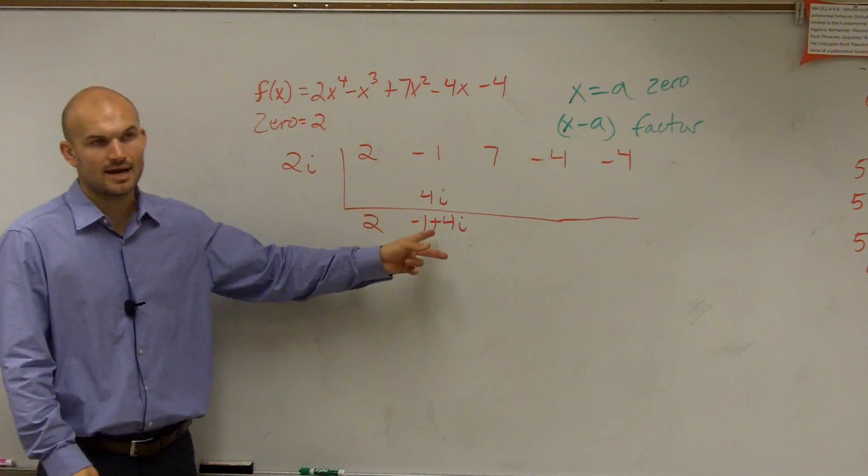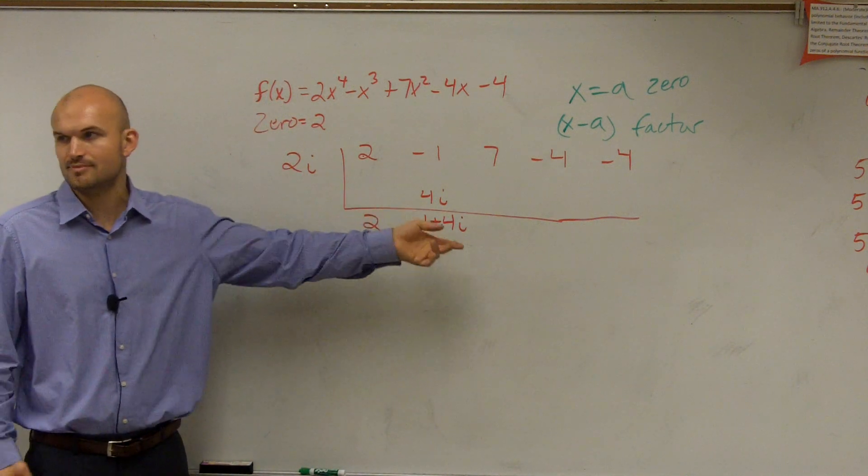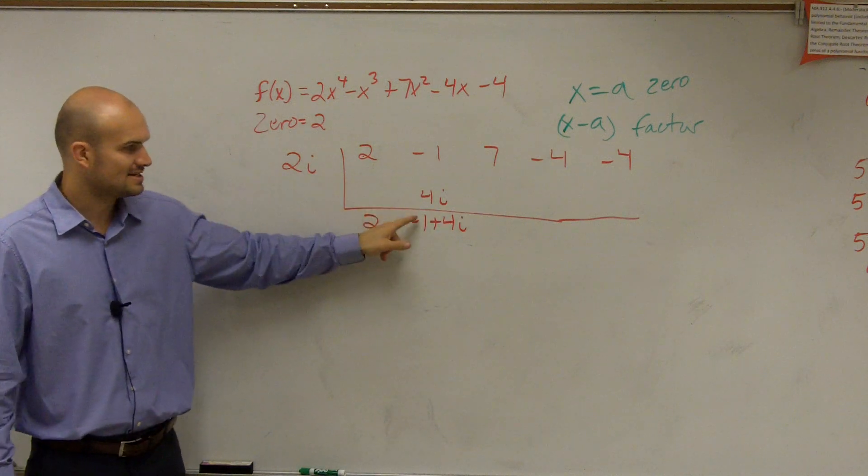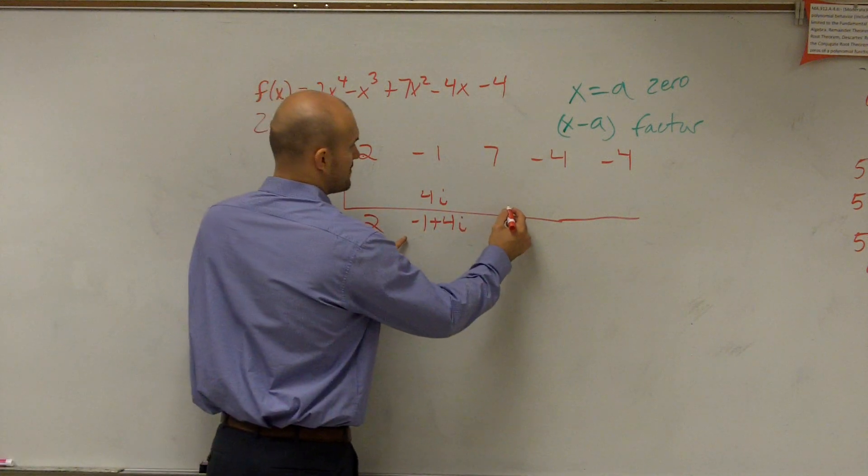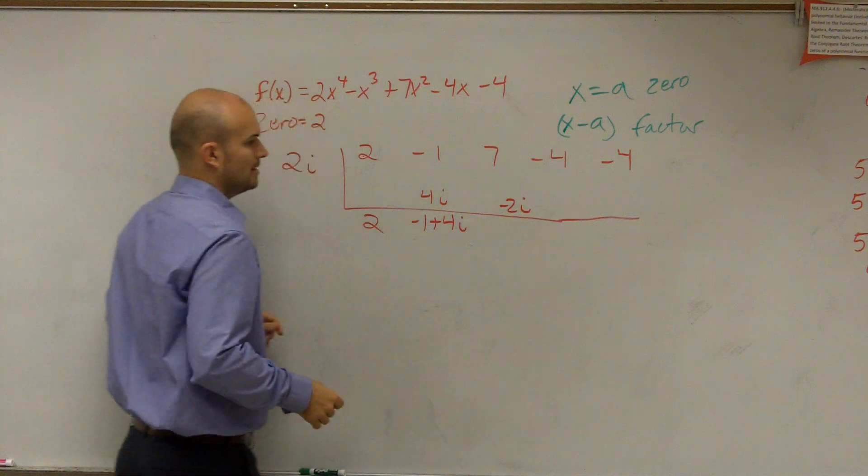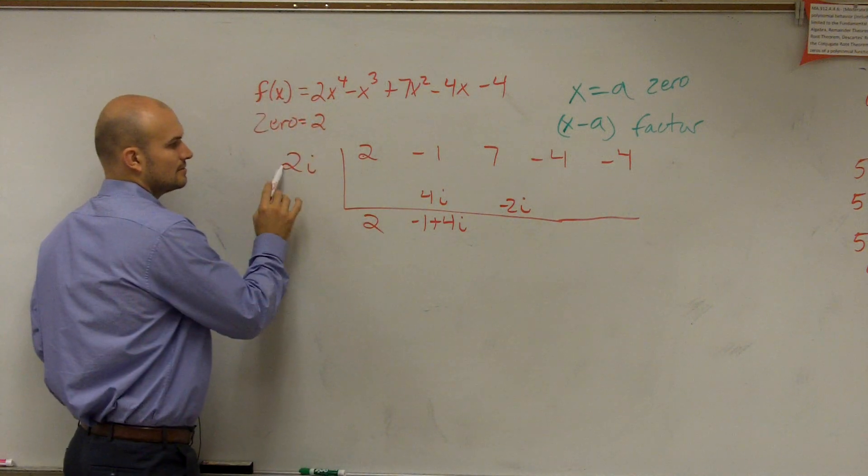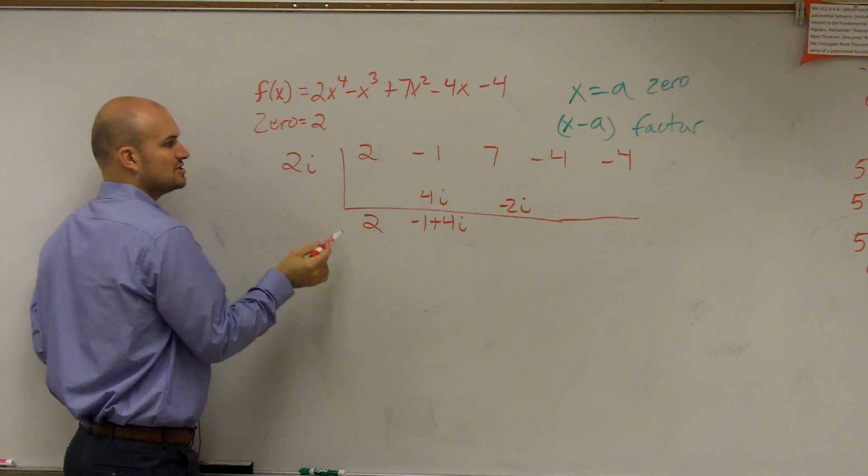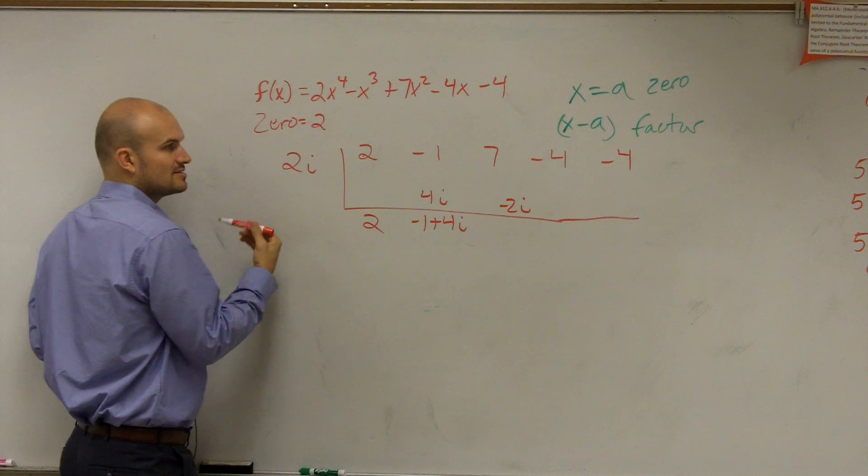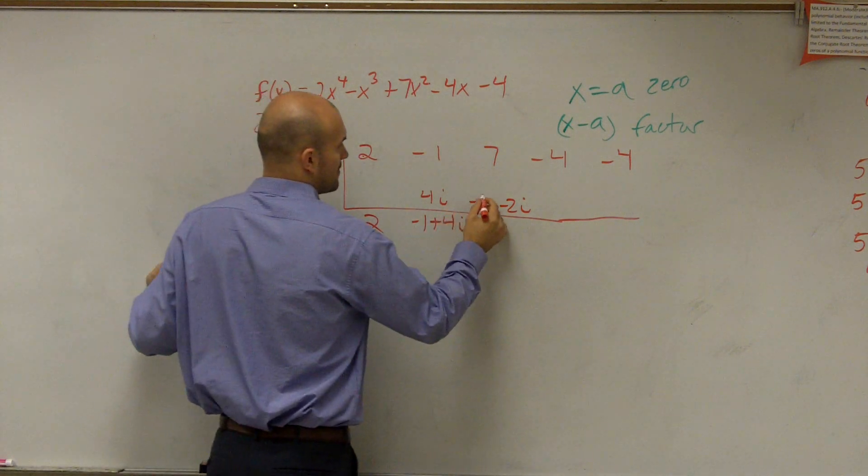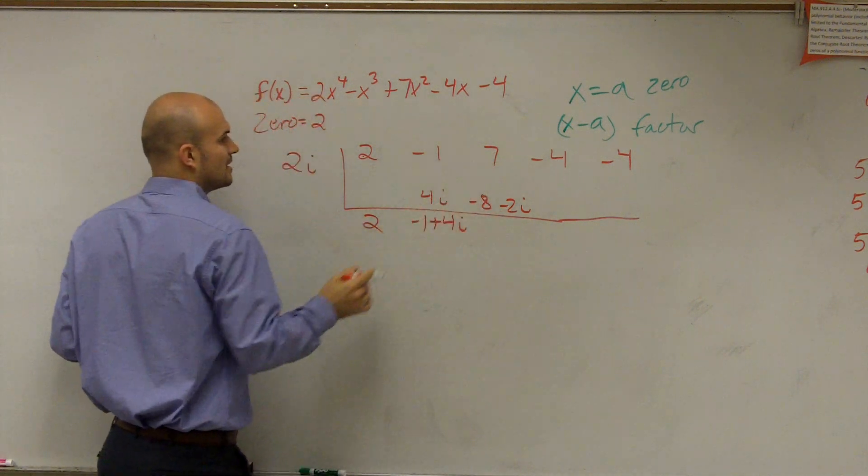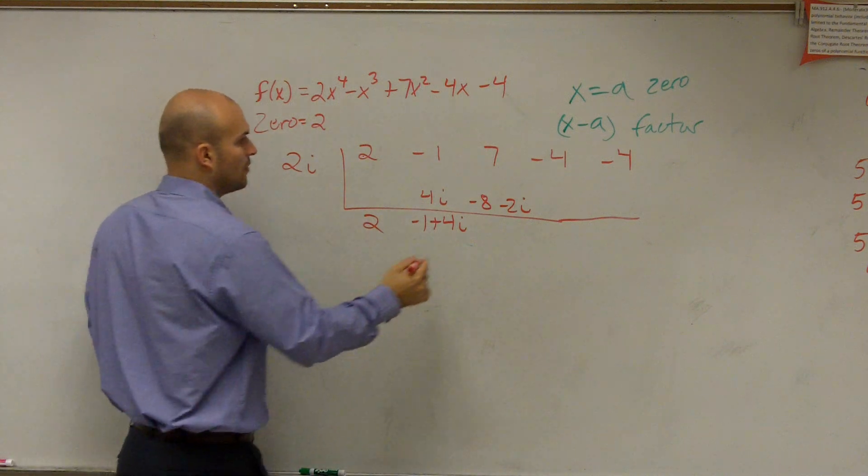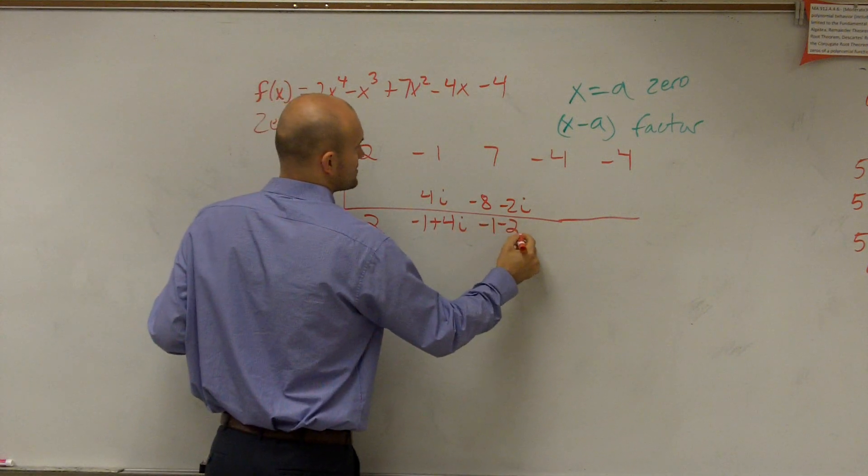Now, how do you multiply that times that? Well, just remember, this is part of your quiz. 2i times negative 1 is a negative 2i. 2i times 4i is going to be 8i squared, which is negative 8. 7 plus negative 8 is going to be a negative 1 minus 2i.